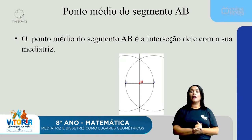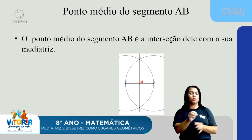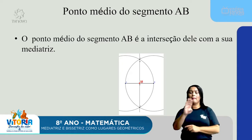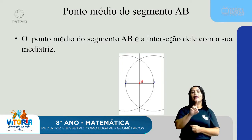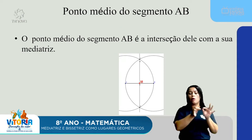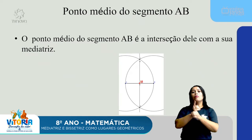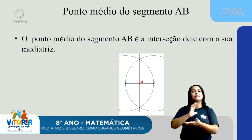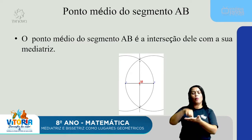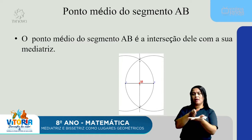O ponto médio do segmento AB é a interseção dele com a sua mediatriz. Ou seja, ao traçar a minha reta ao meio, eu encontrei o ponto médio. O ponto médio é exatamente o meio dessa figura. Eu coloquei aqui um pontinho vermelho com o nome M, que significa médio.